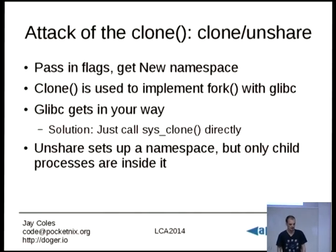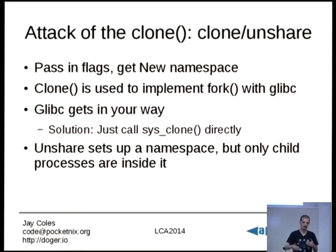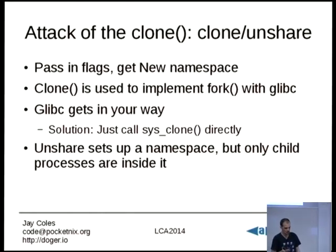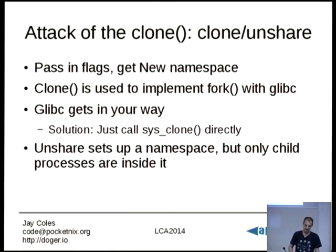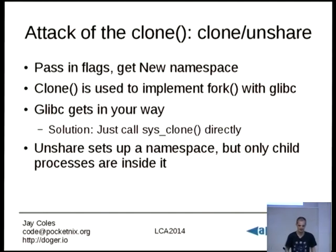Unshare is slightly different: whereas clone forks a process and puts the new process in the new namespace, unshare specifies what happens to all future forked processes — creating a namespace where every process you fork from that point on will be in that namespace. I recommend only choosing one of clone or unshare and not trying to use both, because they will interfere: if you call clone and then unshare, your processes will be in two separate namespaces. If you want to keep a namespace alive after the process has exited, you can bind-mount the namespace file descriptors to a directory, which keeps a reference open and prevents it from being cleaned up.